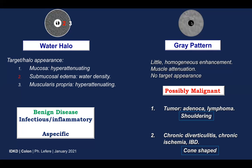In the second distal zone, we have the gray pattern: homogeneous, little enhancement, somewhat like muscle attenuation, no target appearance — so this is possibly malignant. To determine malignancy, we look to other signs. In case of a tumor, you will have shouldering and no diverticula. In case of benign disease — chronic diverticulitis, chronic ischemia, or inflammatory bowel disease — you will have the cone-shaped aspect.